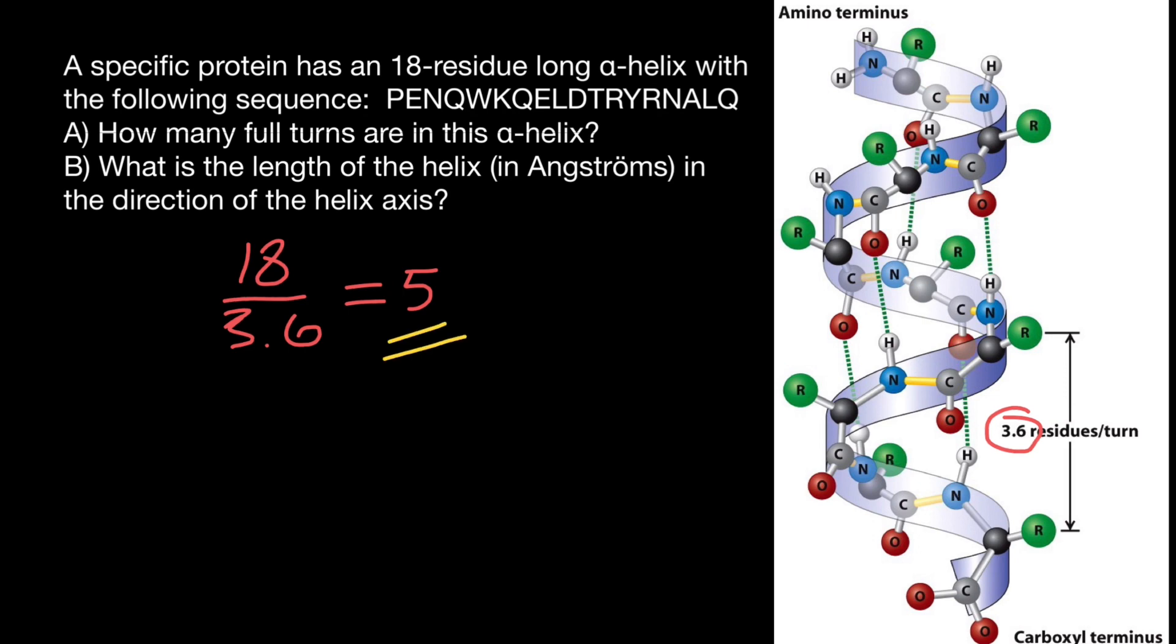And in order to answer the second question, all we have to know that the distance between backbone in one full turn is going to be 5.4 angstroms. So 5.4 angstroms. We know that this alpha helix makes five full turns.